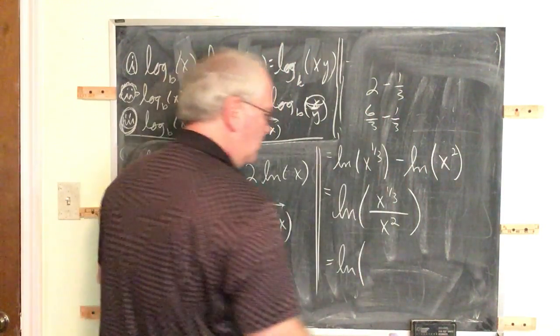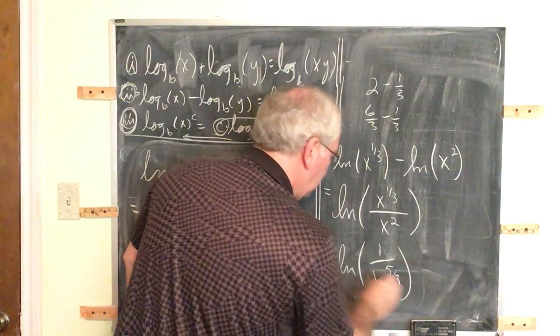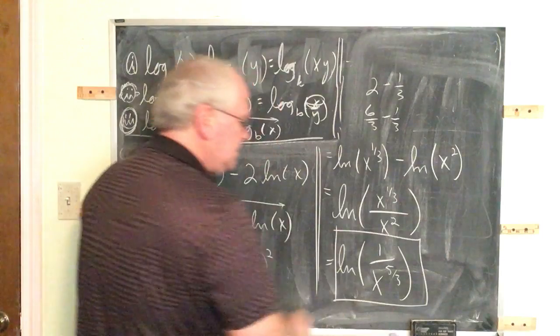That's six thirds minus one third. This natural log of one over x to the five thirds.